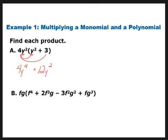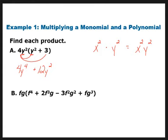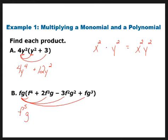That only works if the bases are the same. If I'm taking x² times y², their bases are no longer the same. So the most I can do with that is just write it as x²y². And you're going to have a good example of this on the bottom with letter b. I'm going to distribute — take it and distribute to everything in parentheses. So if I take fg times f⁴, I get f⁵g, plus, if I take fg times 2f³g, I get 2f⁴g². Again, I'm just adding exponents.